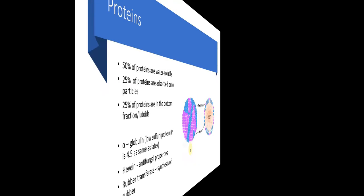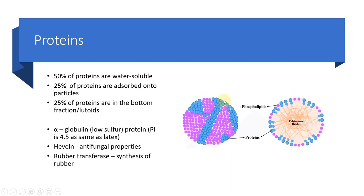Choline, ethanolamine, and phosphatidic acid can act as antioxidants. Regarding proteins: 50 percent are water-soluble, 20 to 25 percent are adsorbed onto rubber particles, and the balance is in the bottom fraction with lutoids. The main protein is alpha-globulin, which contains low sulfur content. The isoelectric point of these proteins is 4.5 — the pH at which net charge is zero. At room temperature, reducing the pH of latex to 4.5 can cause it to coagulate.